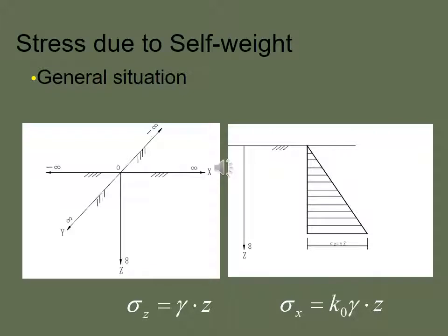Stress due to self-weight. At any general situation given the x-axis, z-axis, or y-axis, in the z-axis means that is the depth in the ground. Sigma z is equal to gamma into z. At the depth z, it is gamma z. Gamma is the unit weight of the soil. And sigma x, that is in x direction, it is k0 into gamma z. That is the lateral stress.